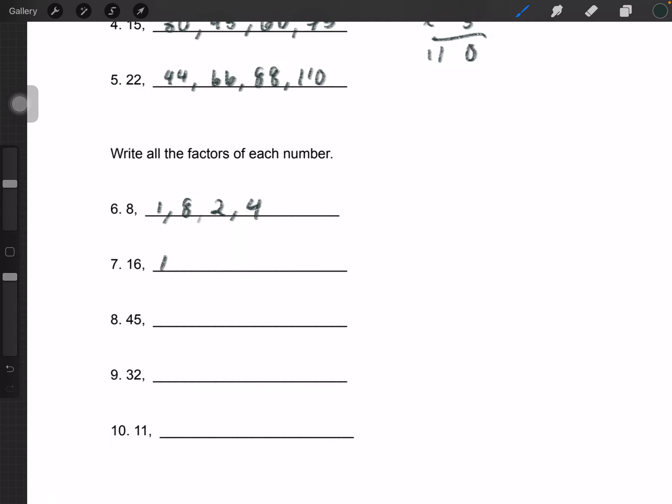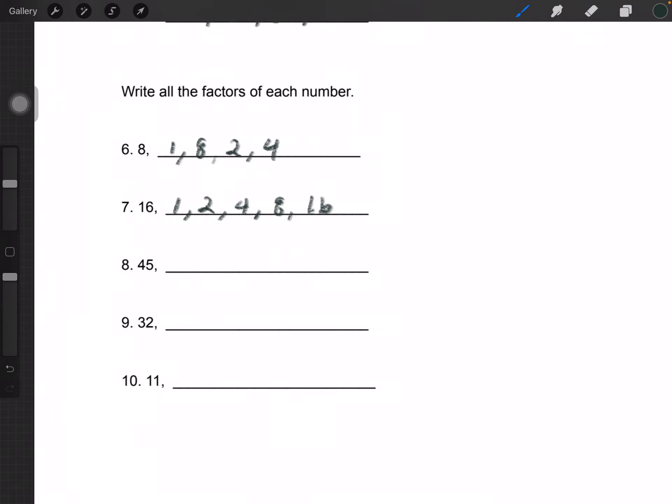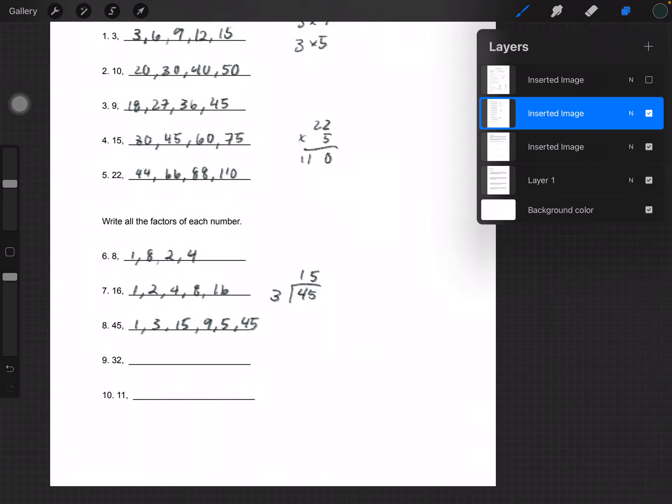For 16, you have 1 times 16, 2 times 8, no 3, 4 times 4. For 45, which is divisible by 3, you have 3 and then 15, you also have 9 and 5, and also 1 and 45 of course.